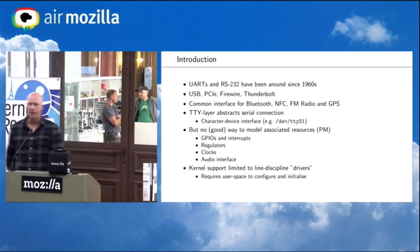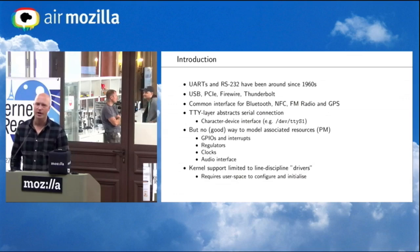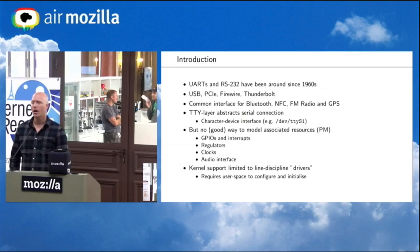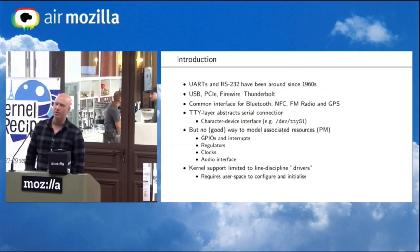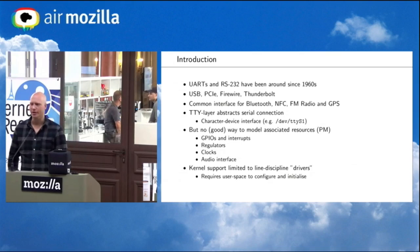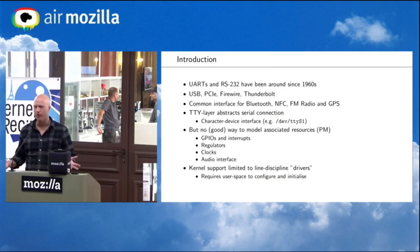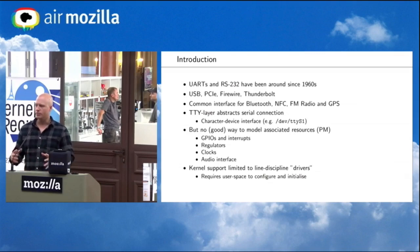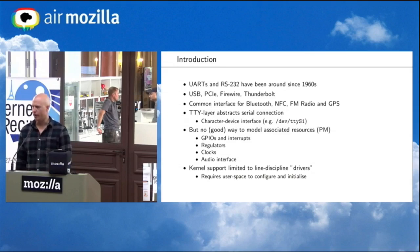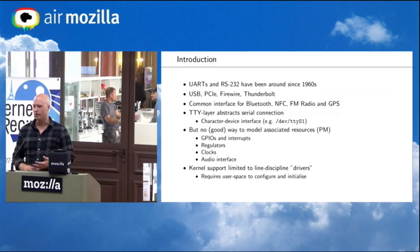UARTs have been around for a fairly long time — since the 1960s, we've had both UARTs and the RS-232 electrical signaling standard. And despite the advent of newer technologies like USB and PCI, they don't seem to be going anywhere anytime soon. They're still a common interface in embedded systems for Bluetooth, NFC, radio, and GPS devices. The kernel TTY layer provides an abstraction for the serial connection itself, and you've all seen familiar character devices like ttyS1, which you can use to read, write, and access the underlying hardware.